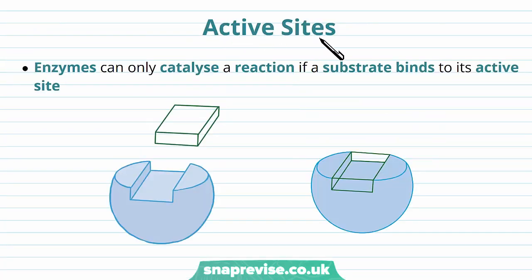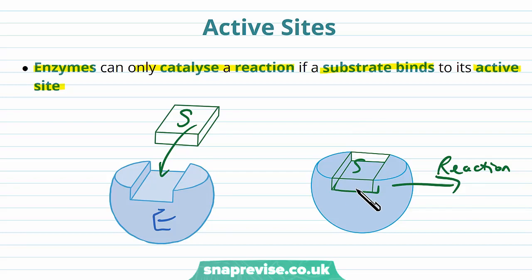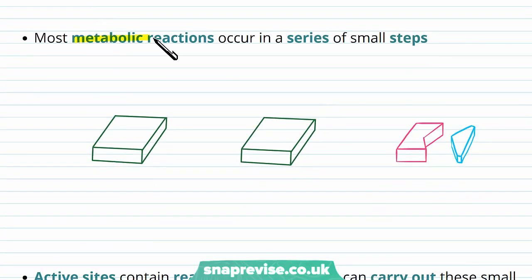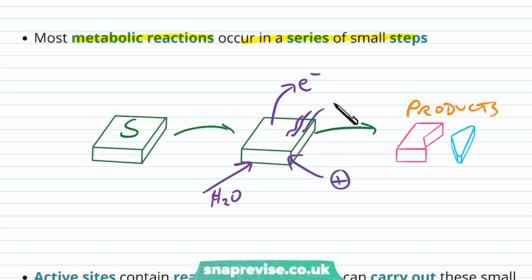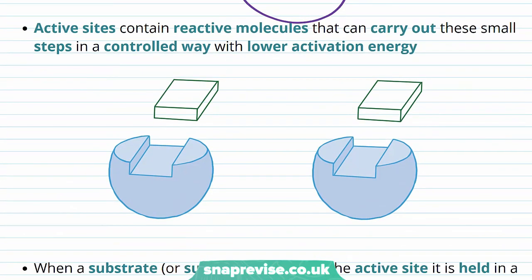Enzymes only catalyze a reaction if the substrate binds to the specific active site it's designed for. Once bound, the reaction occurs — they must interact for the reaction to start working. Most metabolic reactions aren't one single step; they occur in a series of steps involving addition of water, removal of electrons, addition of ions, or changes in shape. The active site of the enzyme contains reactive molecules that carry out all of these steps in a controlled way, with a lower activation energy than normal.